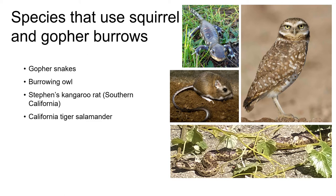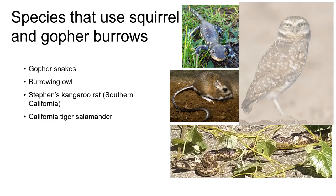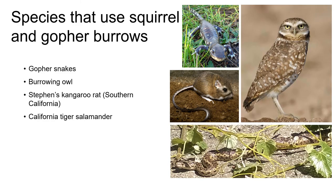Several species rely on abandoned squirrel and gopher burrows for cover and breeding. These include gopher snakes, burrowing owls, the California tiger salamander, and in Southern California the Stevens kangaroo rat.